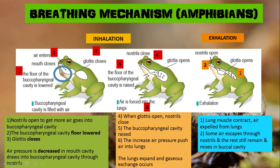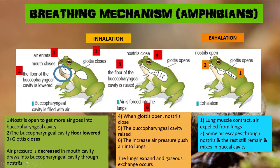This is the structure of the glottis and the buccal pharyngeal cavity. Now for the exhalation process in amphibians: the lung muscle contracts — this is the structure of the lungs — the muscles contract so the air is expelled from the lungs. Some air escapes through the nostrils and some will remain and mix in the buccal cavity.